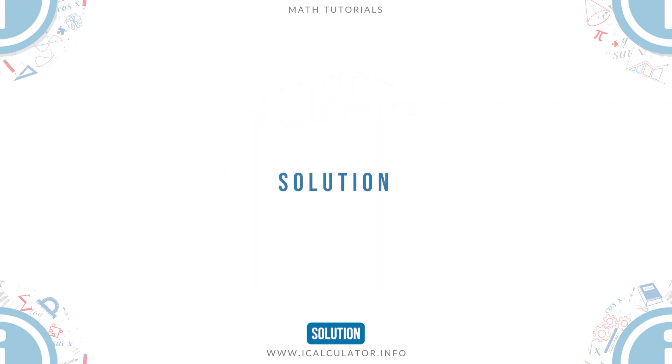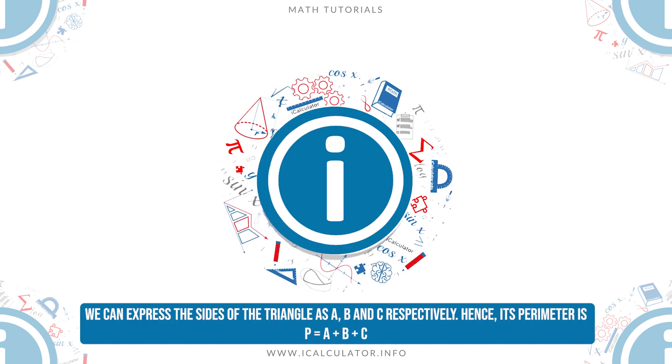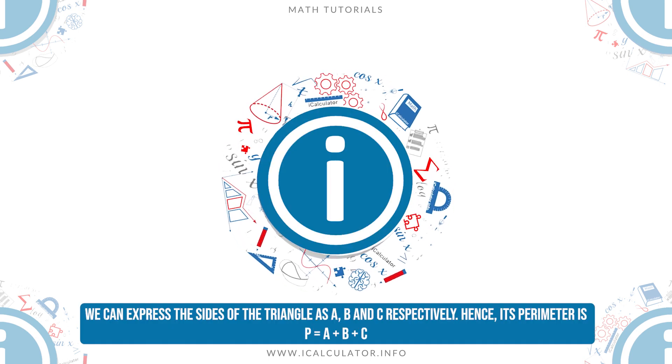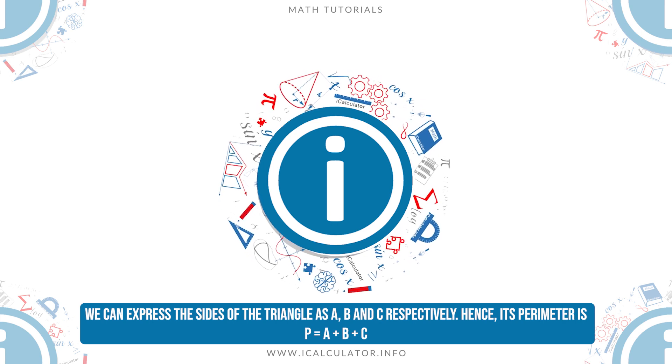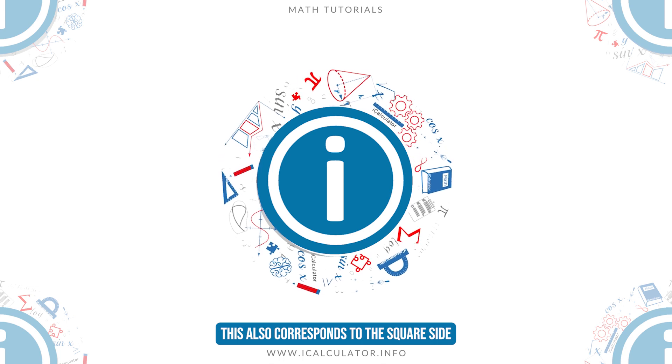Solution. We can express the sides of the triangle as a, b and c respectively. Hence, its perimeter is p equals a plus b plus c. This also corresponds to the square side.